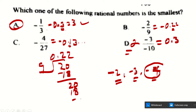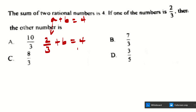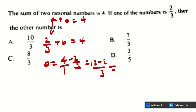The next question: the sum of two rational numbers is 4. If one number is 2 over 3, find the other. We write 2/3 plus b equals 4, so b equals 4 minus 2/3. Using cross multiplication: 4 times 3 minus 2, all over 3, gives 12 minus 2 over 3, which is 10 over 3. The answer is found in A.